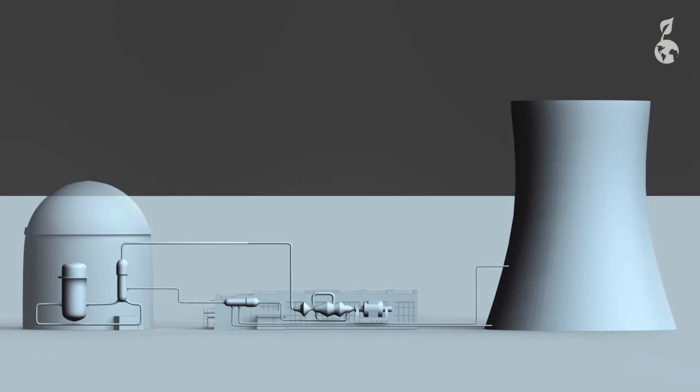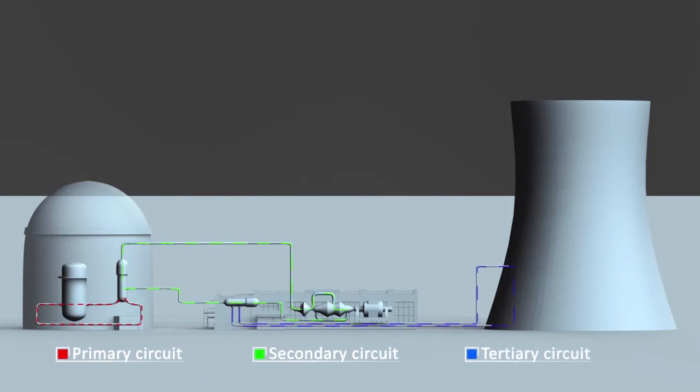Water in the primary circulation system never leaves the containment building. This water is radioactive since it has been in direct contact with the fuel rods. Water in the secondary circulation system is used to drive the turbines and is not radioactive. The cooling circulation system provides cool water and is used to condense the steam in the secondary circulation system.